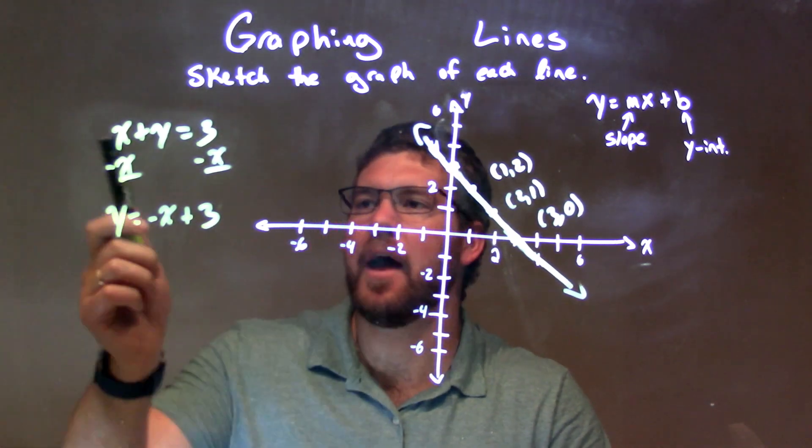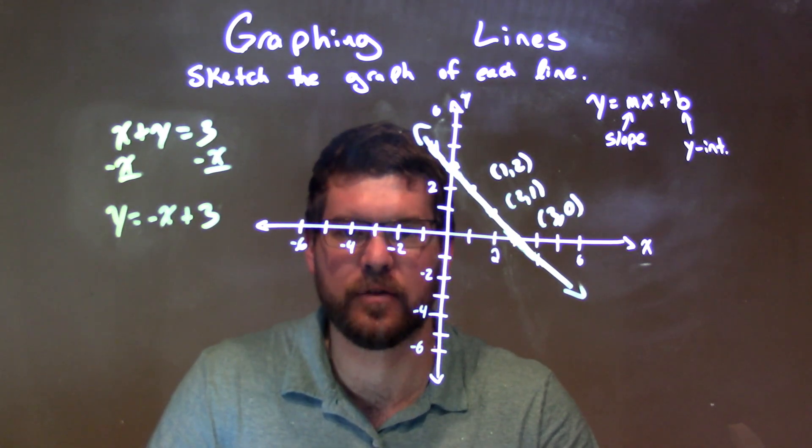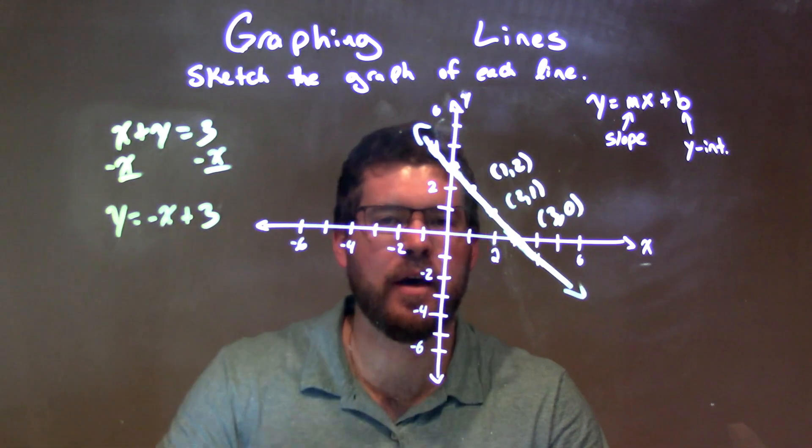So a quick recap: we have x plus y equals 3. We can get y by itself in slope-intercept form. Subtract the x from both sides, and got y equals negative x plus 3.